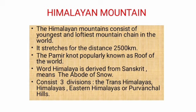Himalayan Mountains. The Himalayan Mountains consist of the youngest and loftiest mountain chain in the world, formed only a few million years ago due to folding of the earth's crust from tectonic activity. It stretches for a distance of 2,500 km from the Indus in the west to the Brahmaputra in the east. The width varies from 500 km in Kashmir to 200 km in Arunachal Pradesh. The Pamir Knot, popularly known as the Roof of the World, is the connecting link between the Himalayas and the high ranges of Central Asia.